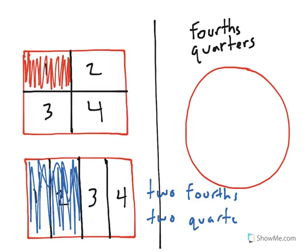Now, the last one we'll look at is the circle. And the easiest way to break the circle into fourths is to first break it into halves, up and down, and then break it across.